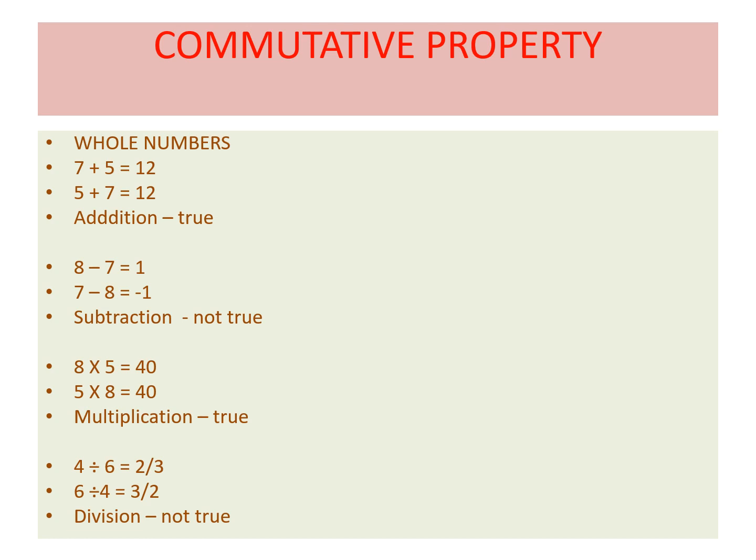Next we are going to see the commutative property. When we interchange two numbers in a basic operation and get the same answer, the operation is commutative. First we will deal with whole numbers.